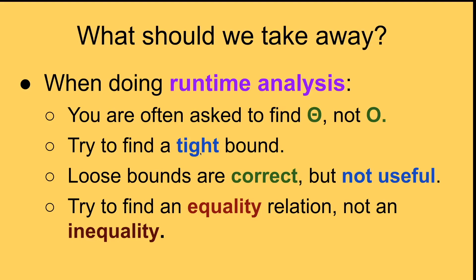And then try to find a tight bound, as tight as you can. So first of all, try to find big theta. That means find both lower bound and upper bound using equality, not inequality. And also pay attention and loose bounds, although are correct, like the n to the power of 2 that we found, but usually they're not as useful as tight bounds.